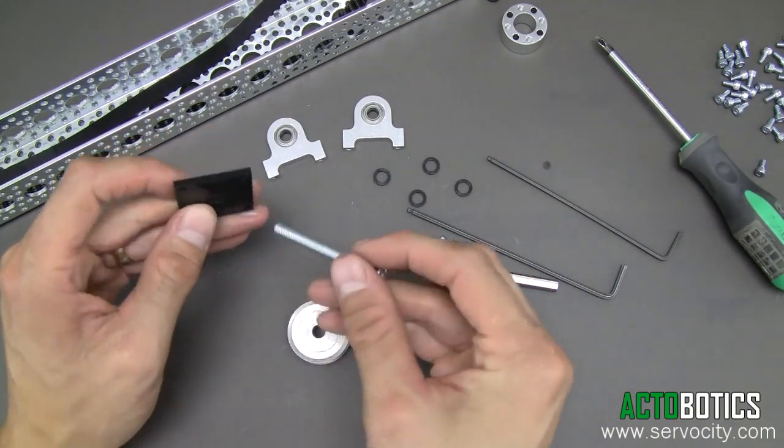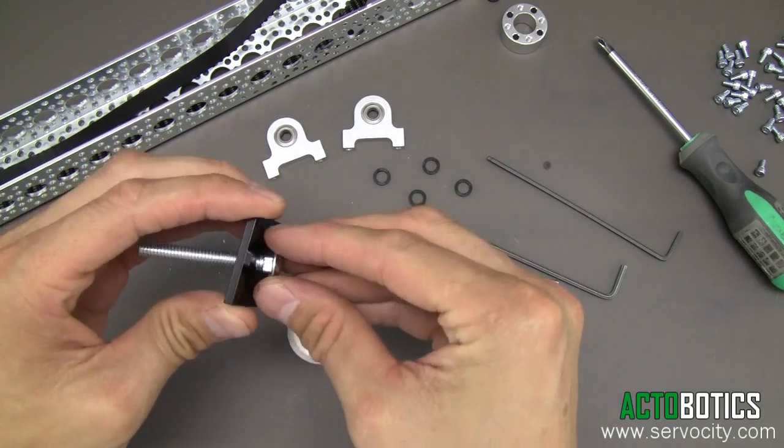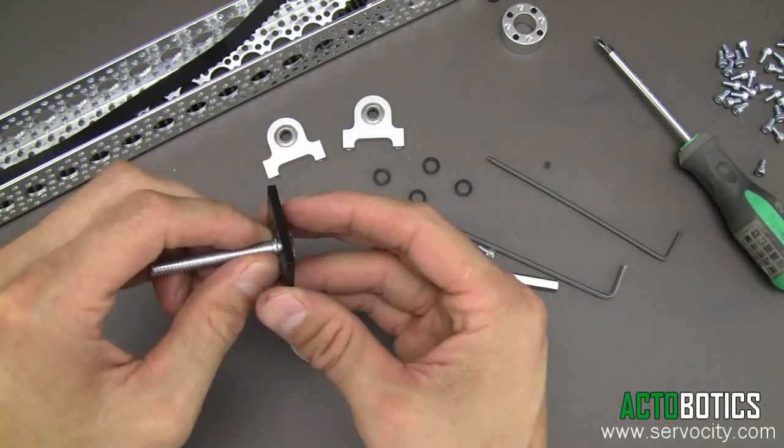As you can see here, I've got the components. We've got a black acetal plate that the quarter-twenty carriage bolt will slide right into.